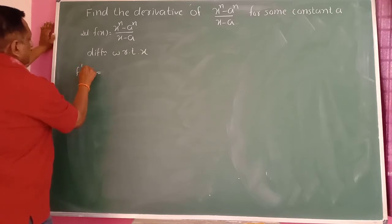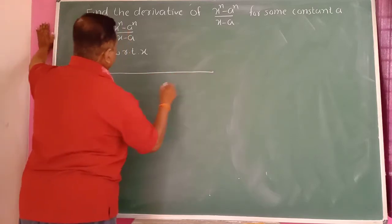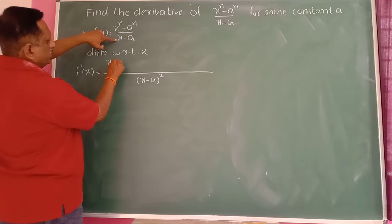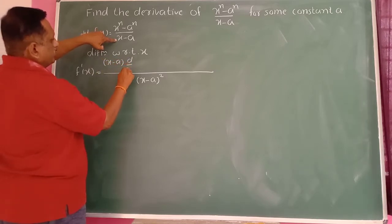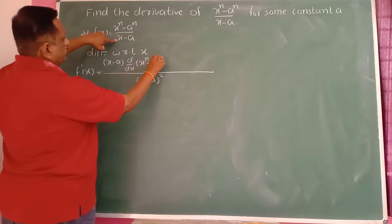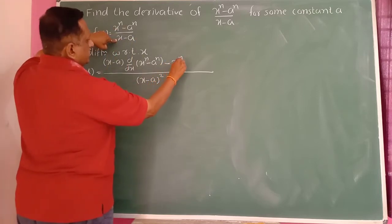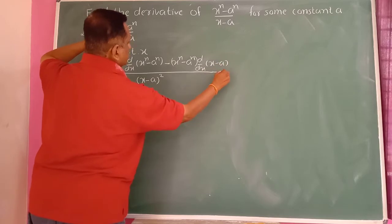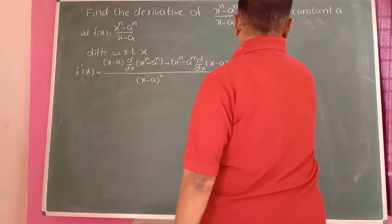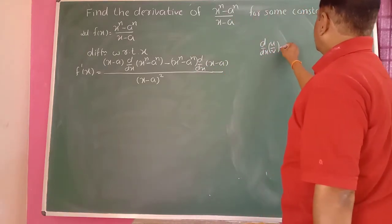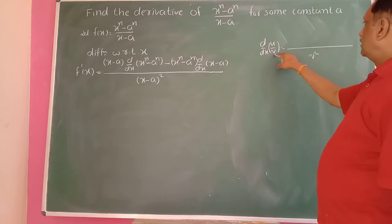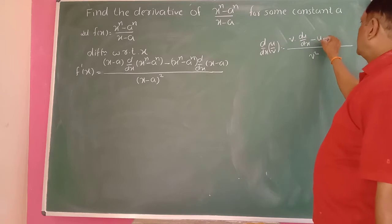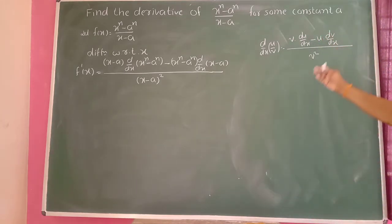So f'(x) is equal to: take the denominator squared, (x - a) squared, as the denominator term. Then write the denominator term (x - a) into differentiation of (x^n - a^n), minus (x^n - a^n) as it is, into differentiation of the denominator term (x - a). We are applying the quotient formula: d/dx of u/v equals v squared in the denominator, then v times du/dx minus u times dv/dx.